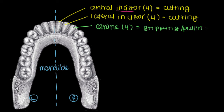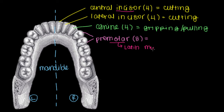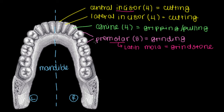Now that we're done with our canines, we can talk about our premolars. We have two on each side, which means in total we have eight premolars. The way to think about what these do is in two parts. First, the root 'mola' is a reference to the Latin word meaning 'to grind' — it actually represents a grindstone. Those were called 'mola' in Latin, and it makes sense because our premolar teeth are used for grinding down our food as we chew.